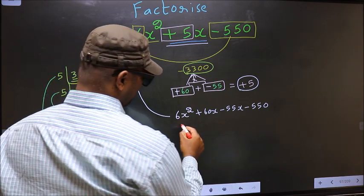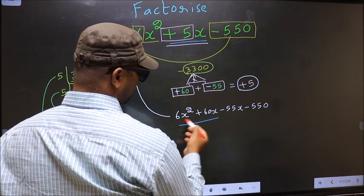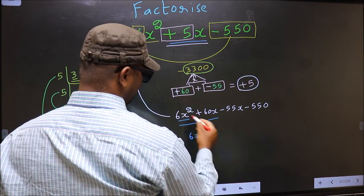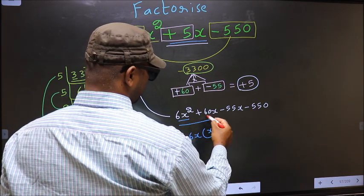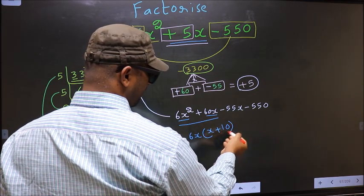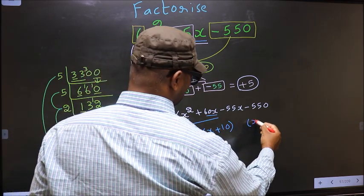Next, now from these 2 terms, what can be taken out common is 6x. So here you get x plus, from this 6x out you get 10. Now whatever you got here, here also you should get the same thing.